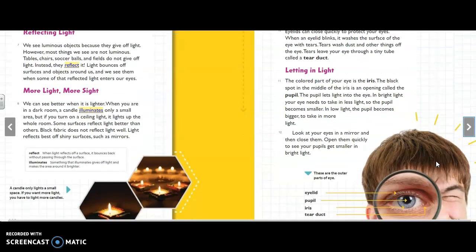Letting in light. The colored part of your eye is the iris. The black spot in the middle of the iris is an opening called the pupil. The pupil lets light into the eye. In bright light your eye needs to take in less light, so the pupil becomes smaller. In low light the pupil becomes bigger to take in more light. Look at your eyes in a mirror and then close them, open them quickly to see your pupils get smaller in bright light.